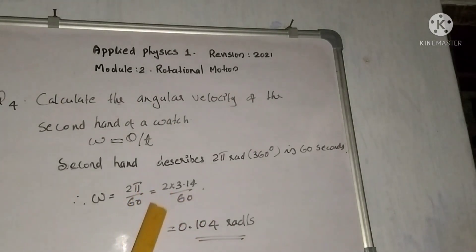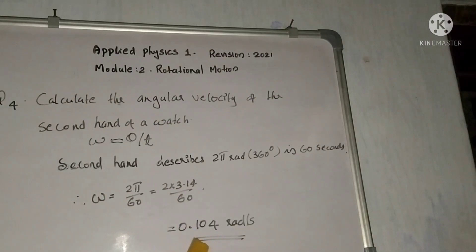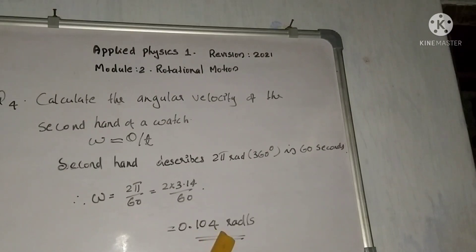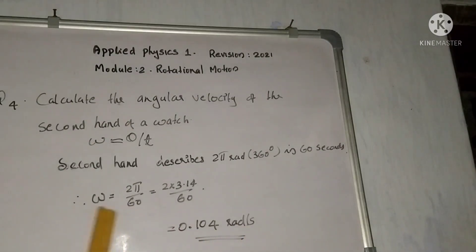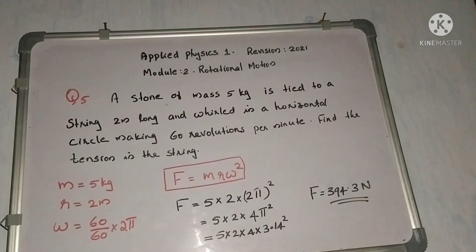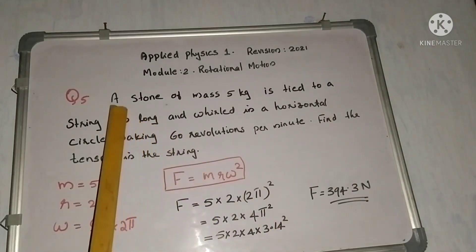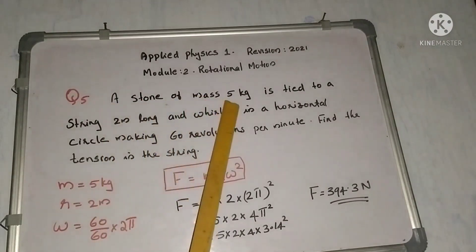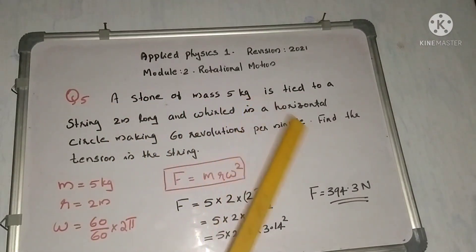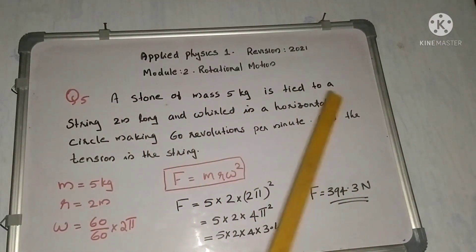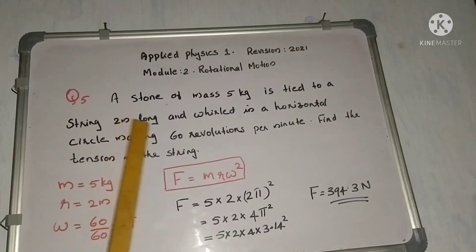Angular velocity equals 2π divided by 60, giving approximately 0.1047 radians per second. The angular velocity unit is radians per second.